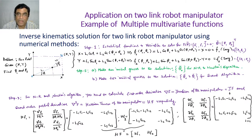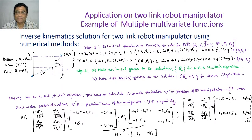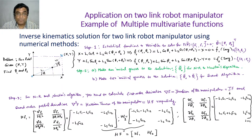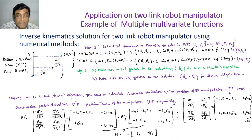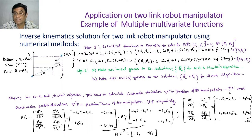Step two: you have to make an initial guess for the solution. For Newton-Raphson and Newton's method, you make one initial guess. If you are using the Secant method, you will have to make two initial guesses. So in step two, you make these initial guesses for the Secant algorithm.